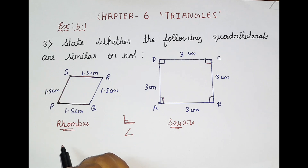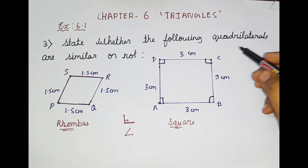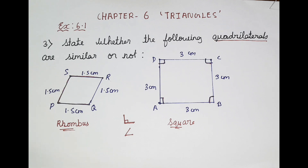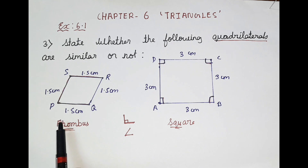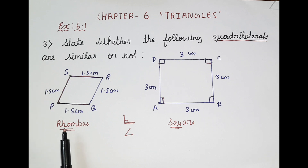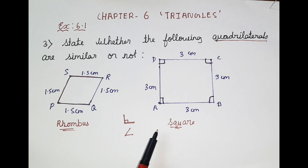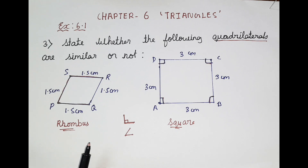You guys might ask how did we find it is a rhombus? Because they mentioned quadrilaterals. Since they mentioned it is a quadrilateral, we know parallelogram, rhombus, square — everything is a quadrilateral. Among these quadrilaterals, the one which is not having 90 degrees is a rhombus. You guys know the properties of rhombus — we studied it in earlier classes. So rhombus means which is not having a 90 degree angle. That is the simple explanation.